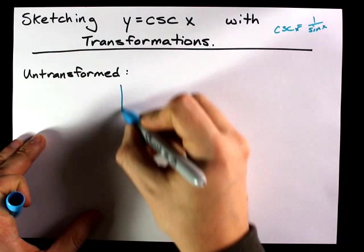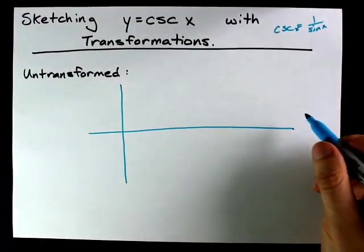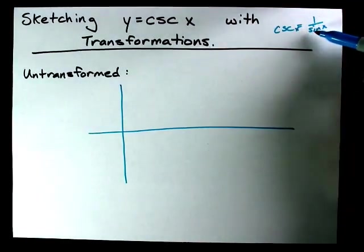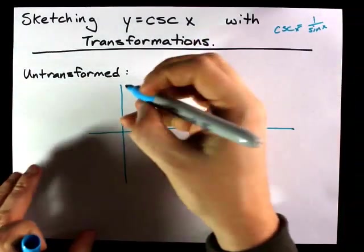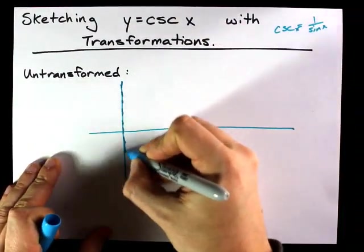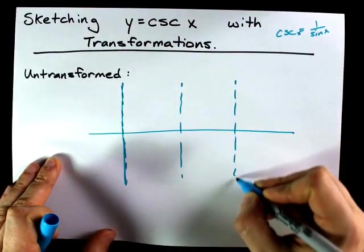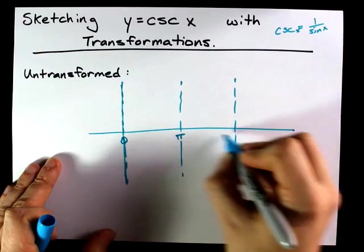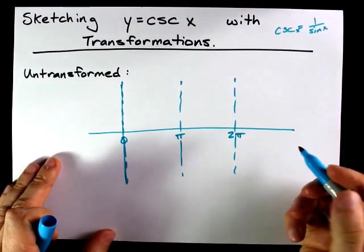Now sine x has x-intercepts at 0, pi, and 2 pi if you're working in radians. And because you can't take 1 divided by 0, that means cosecant x has vertical asymptotes at 0, pi, and 2 pi. And it goes on like that: 3 pi, 4 pi, 5 pi. I'm going to label those here for you. These are vertical asymptotes.